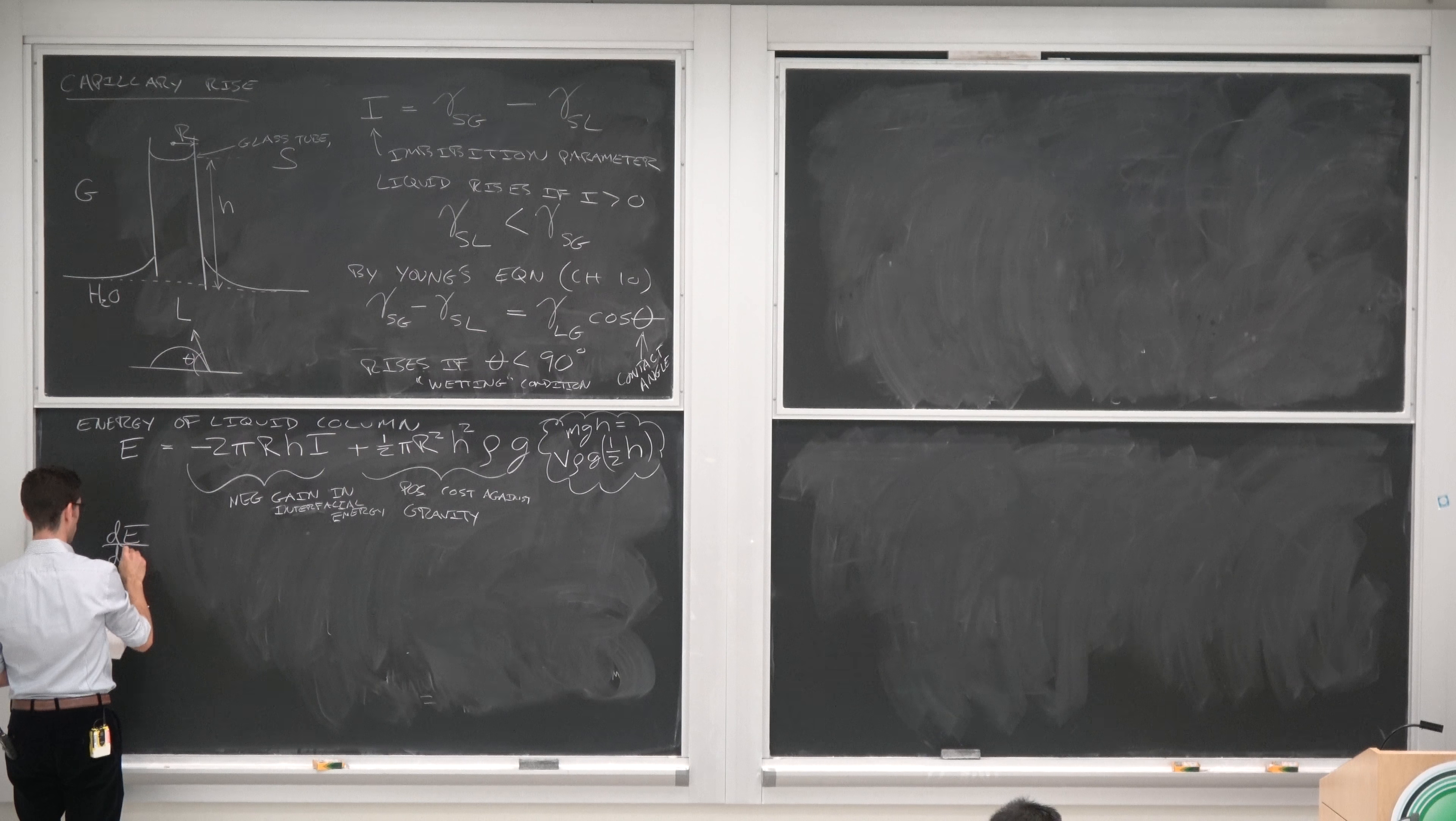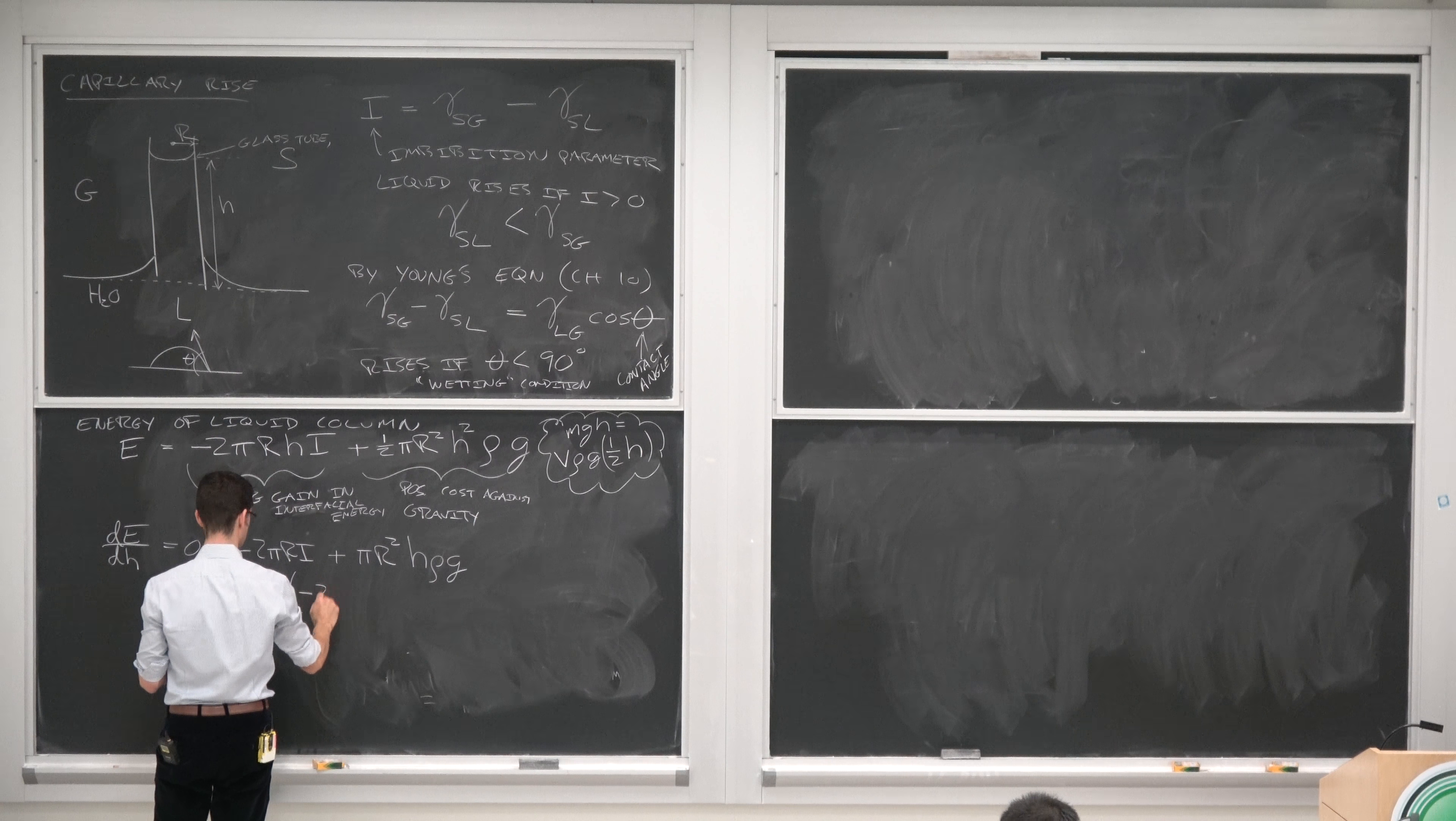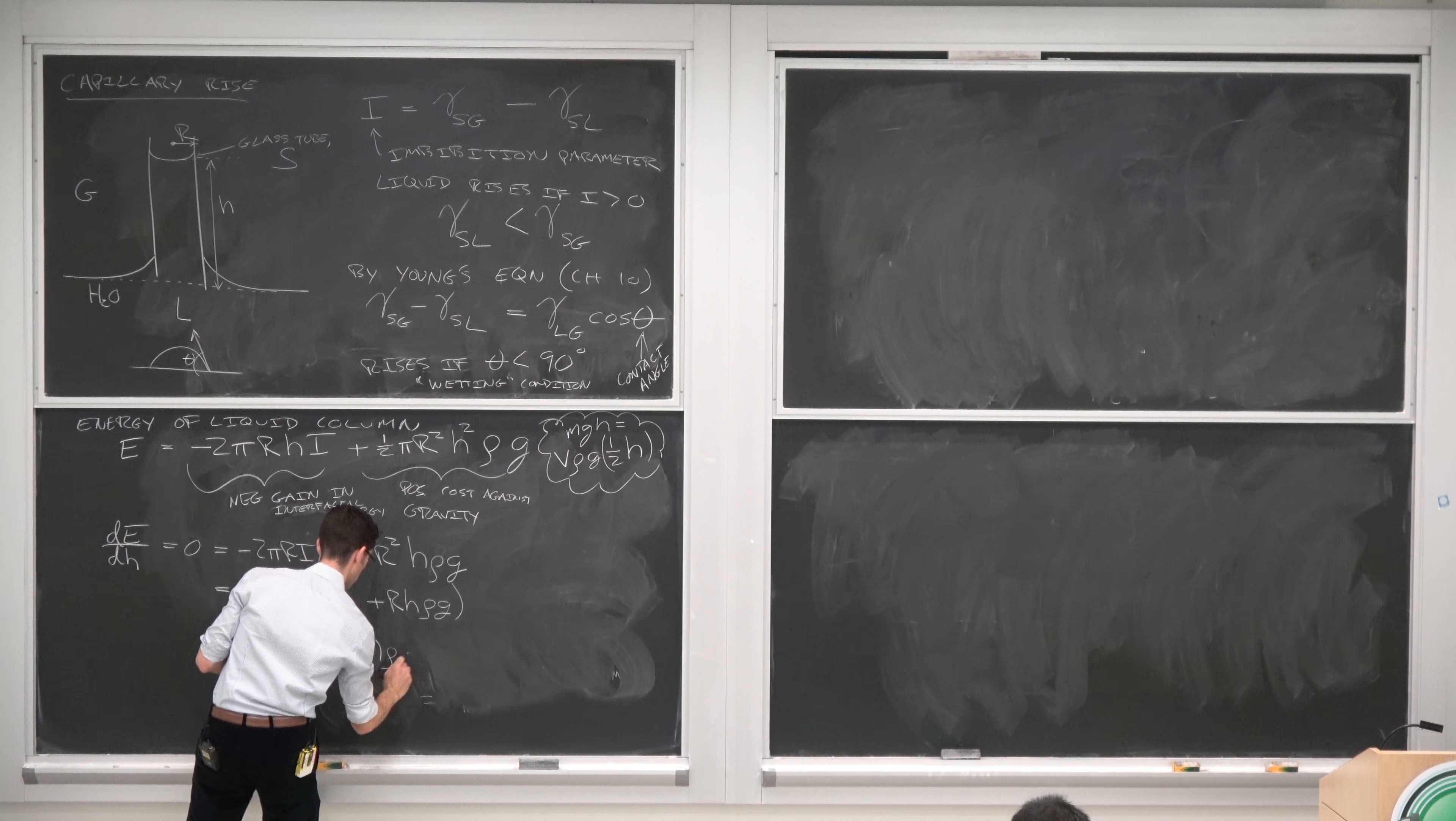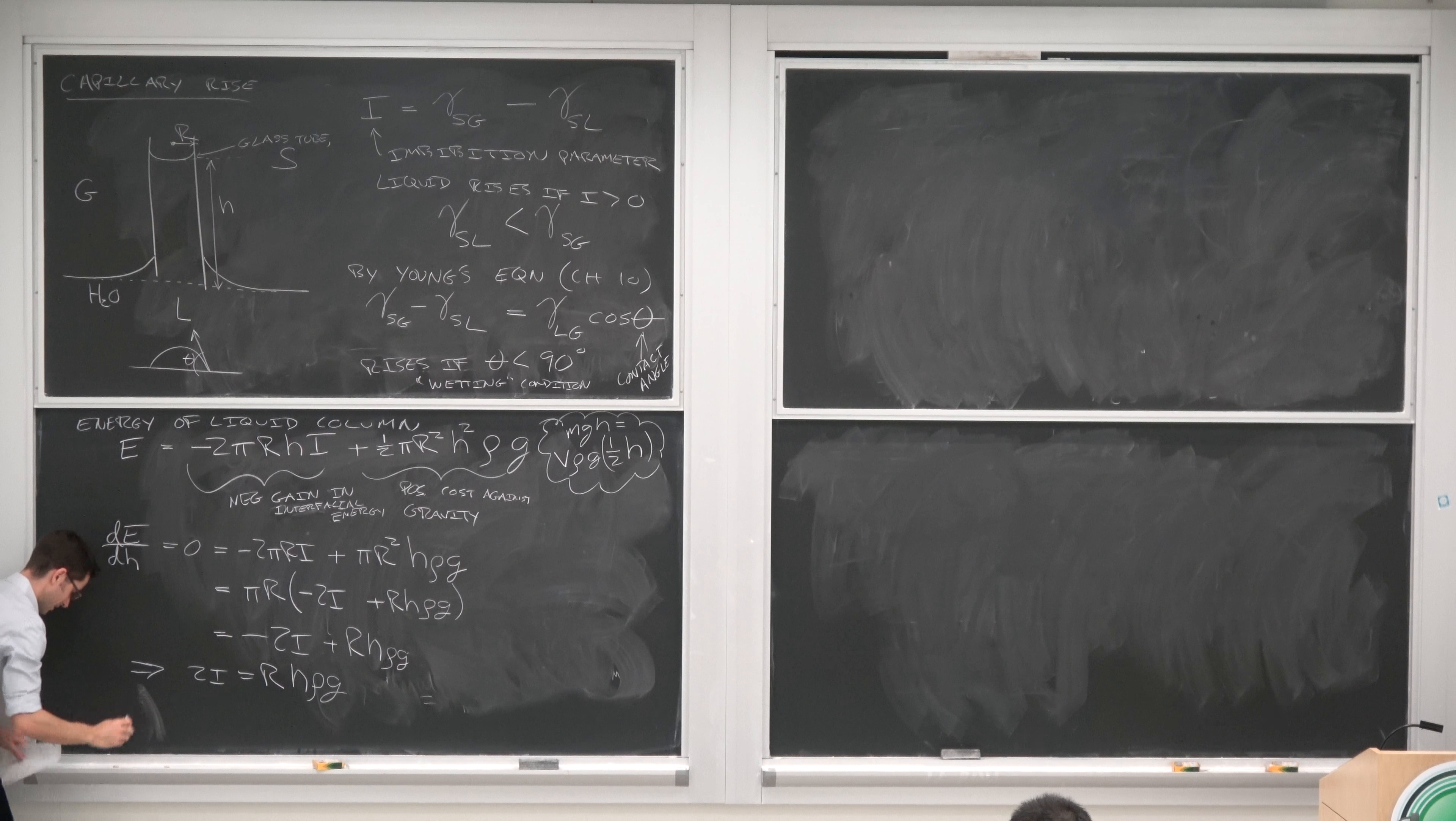So the change in energy with respect to the change in height equals zero equals minus 2 pi R I plus pi R squared H rho G, or pi R times minus 2 I plus R H rho G, or minus 2 I plus R H rho G. Looks like I'm writing like a three year old.